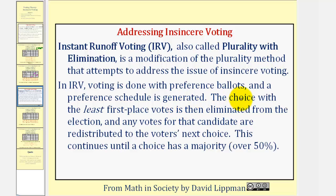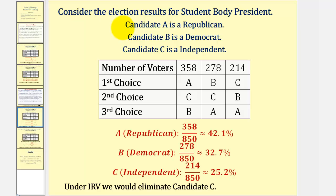So if a voter happens to vote for a candidate that gets the least first place votes, because those votes are transferred to their next choice, this eliminates the motivation for insincere voting. Going back to our previous example, let's determine the winner using the instant runoff method. Notice in this case, candidate C has the least first choice votes, and therefore using the instant runoff method, we would eliminate candidate C.